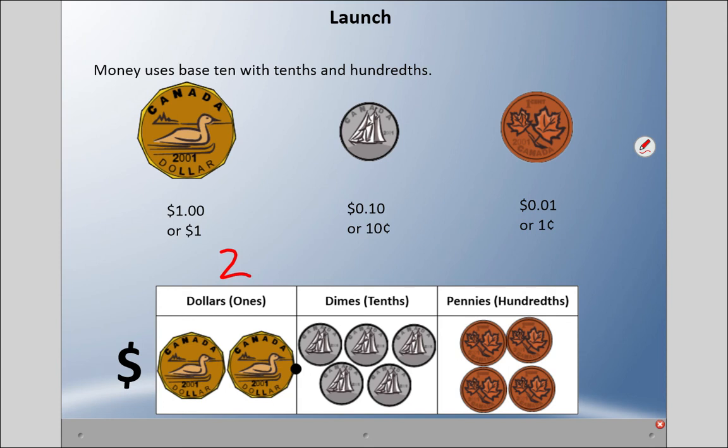I have two whole dollars, I have one, two, three, four, five dimes, and I have four pennies. If I was to put the decimal here, you can see the decimal here. So the amount of money here is two dollars and 54 cents.